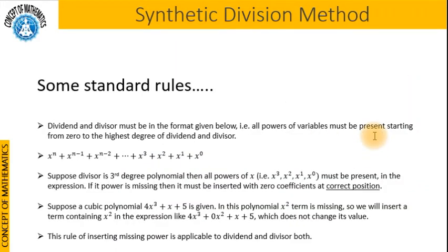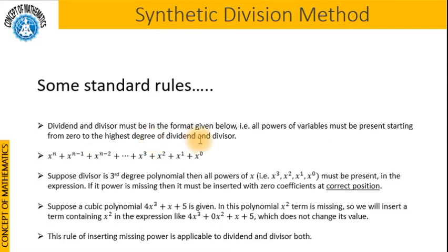Let us learn some standard rules which are to be followed during Synthetic Division Method. The first rule is that the dividend and divisor must be in a specific format — all powers of variables must be present, starting from 0 to the highest degree of the dividend and divisor. Suppose the divisor is a third degree polynomial, then x cubed, x squared, x, and x to the 0th power must all be present. If any power is missing, it must be inserted with a 0 coefficient at the correct position.